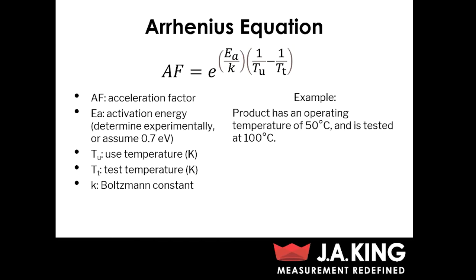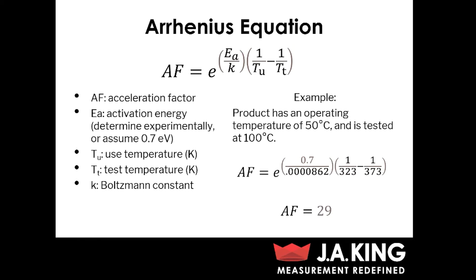Let's run through an example of setting up a test. Let's say you've got a product that has an operating temperature of 50 degrees C, and you want to accelerate that and test the product at 100 degrees C. You plug everything into your equation — in this case we use 0.7 as our activation energy value — and then we plug in our temperatures, adding 273 to them to convert to Kelvin. And we come up with an acceleration factor of 29. So if you're testing your part in the lab for one day, that's going to equate to 29 days in the field.